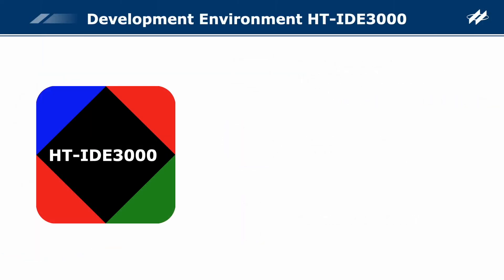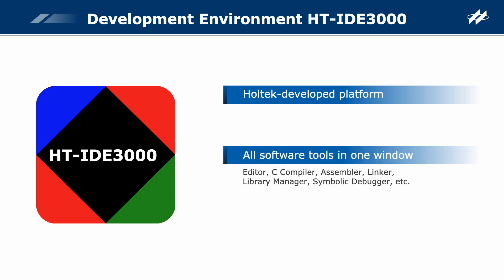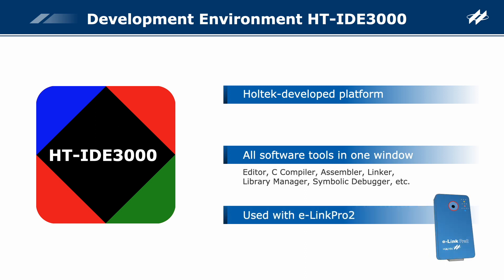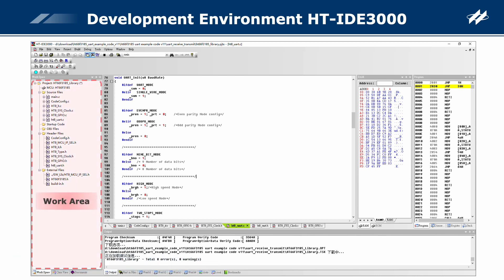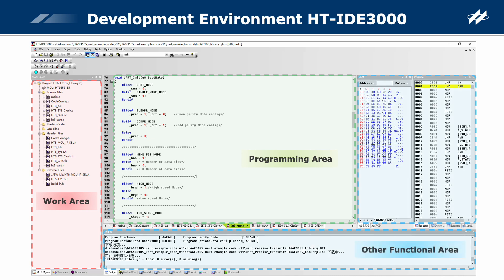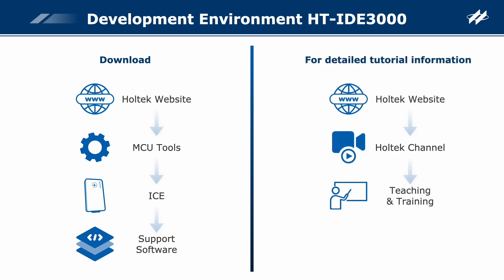The HT-IDE 3000 platform is developed by Holtec, integrating all software tools into a one-window environment, which are all available to users free of charge. This IDE should be used together with the development tool E-Link Pro 2. The HT-IDE 3000 main interface contains the work area, programming area, and other functional areas. The installation package can be downloaded from Holtec's official website.